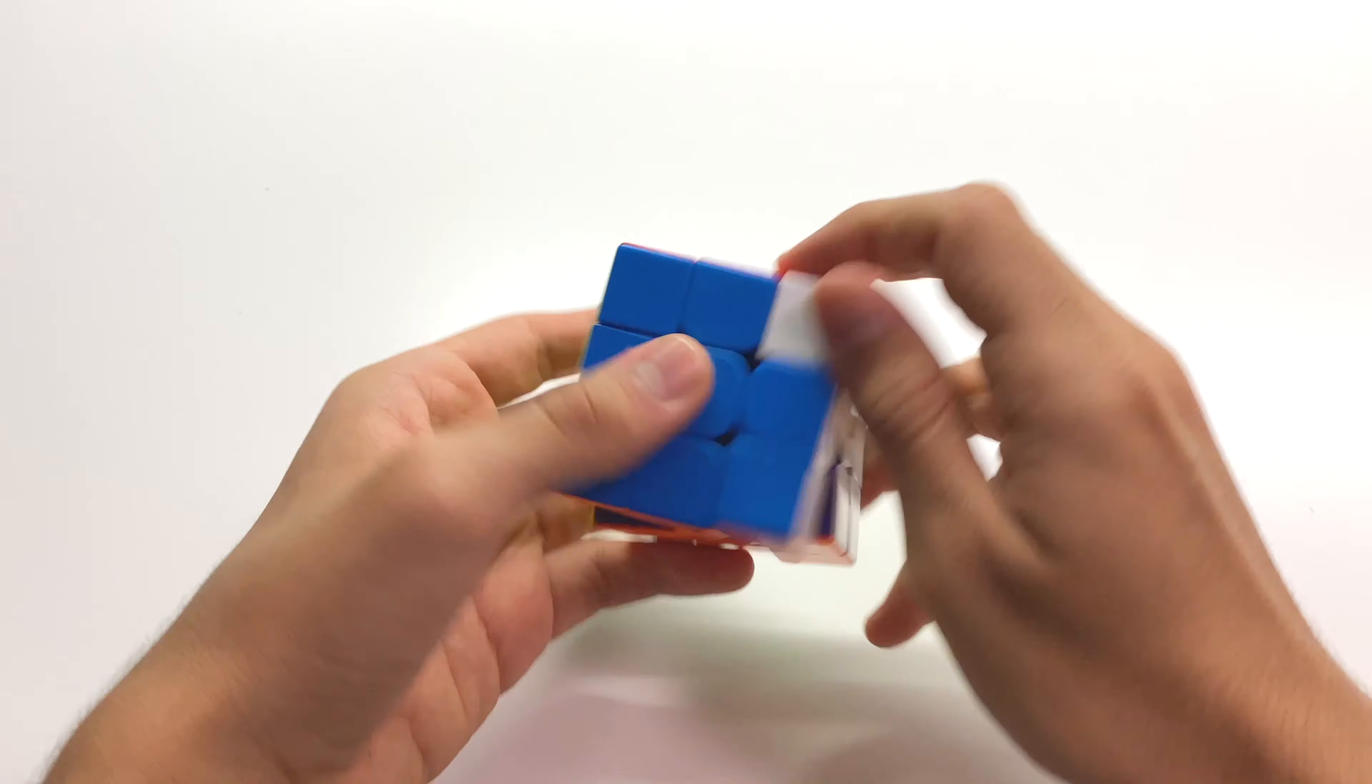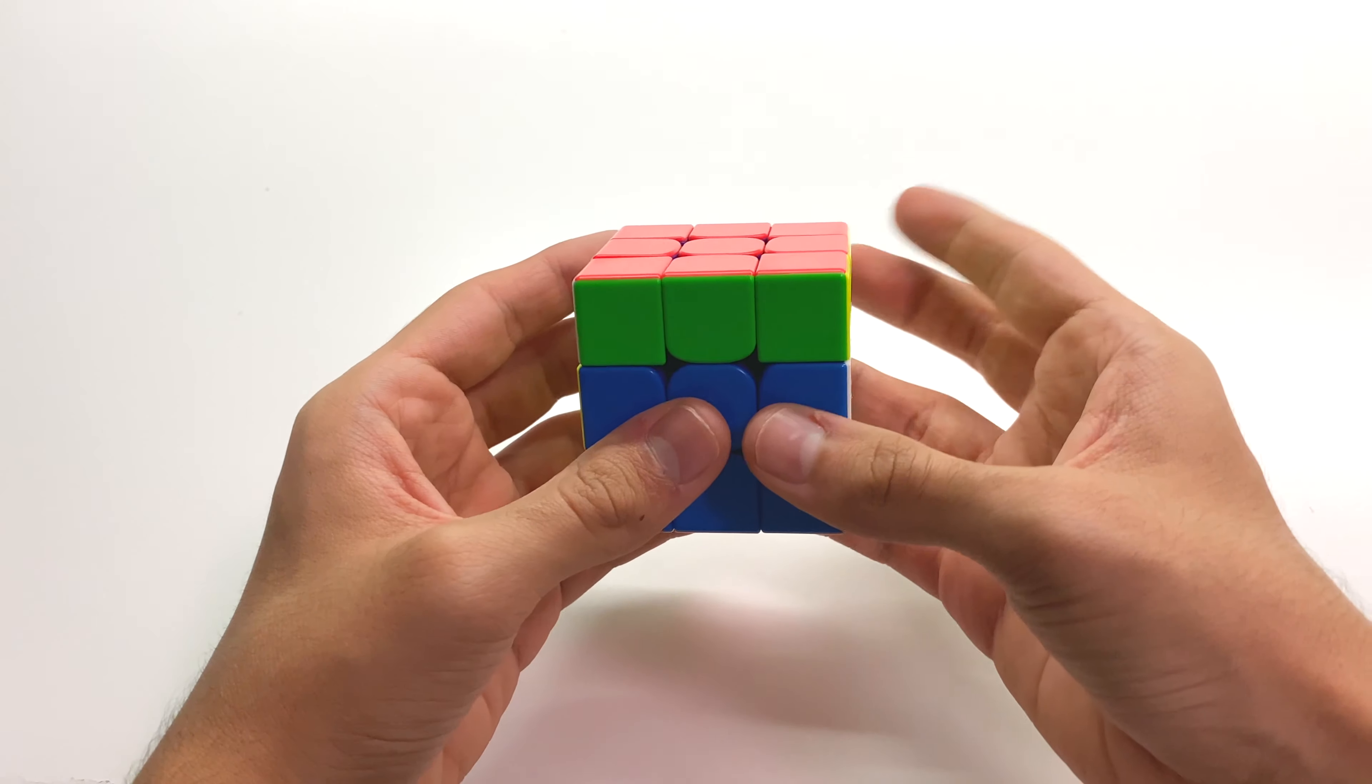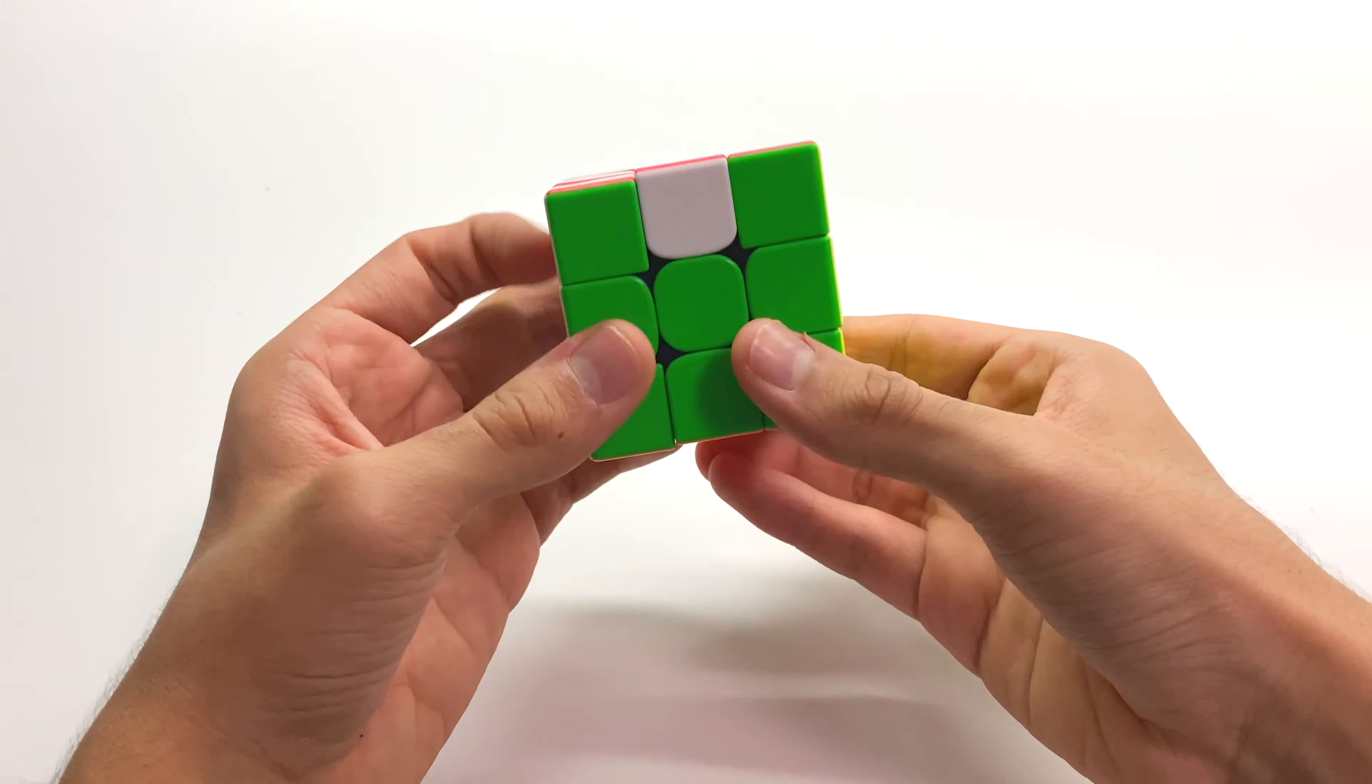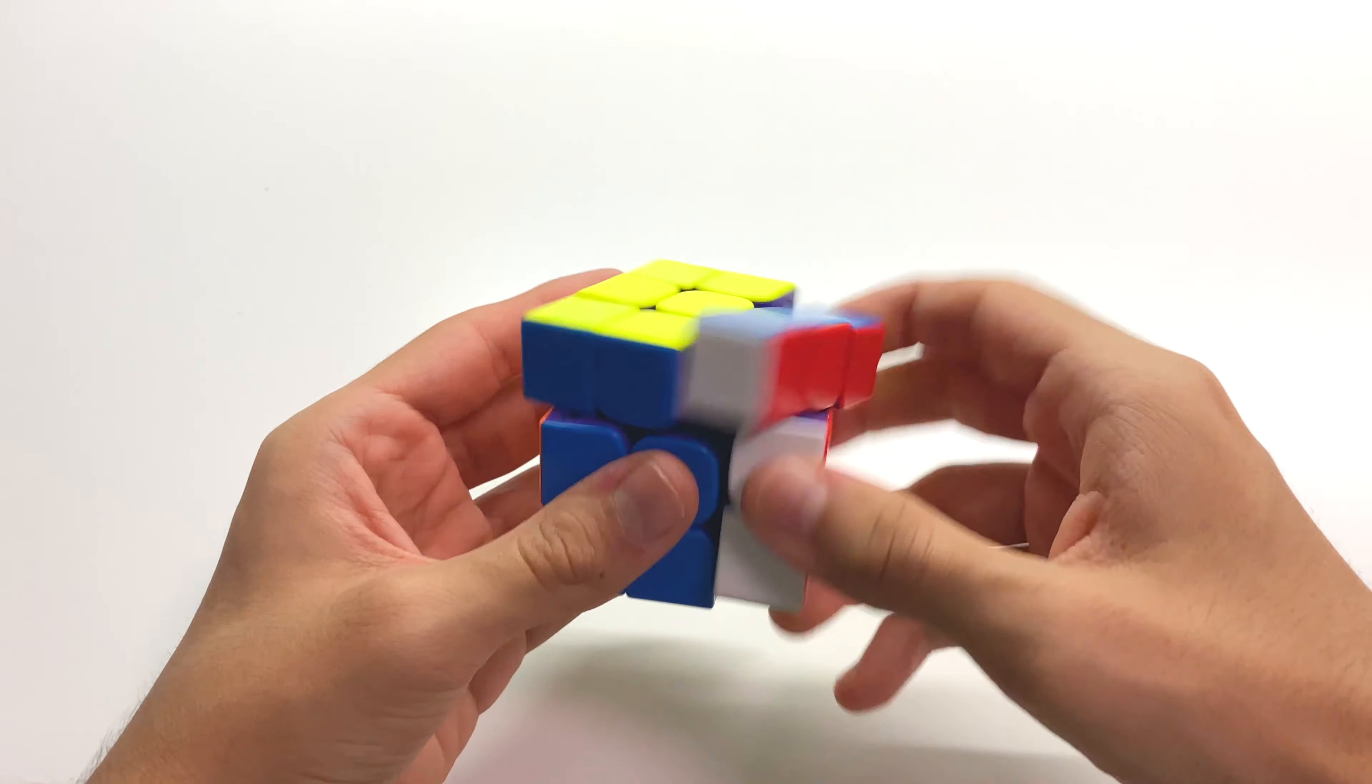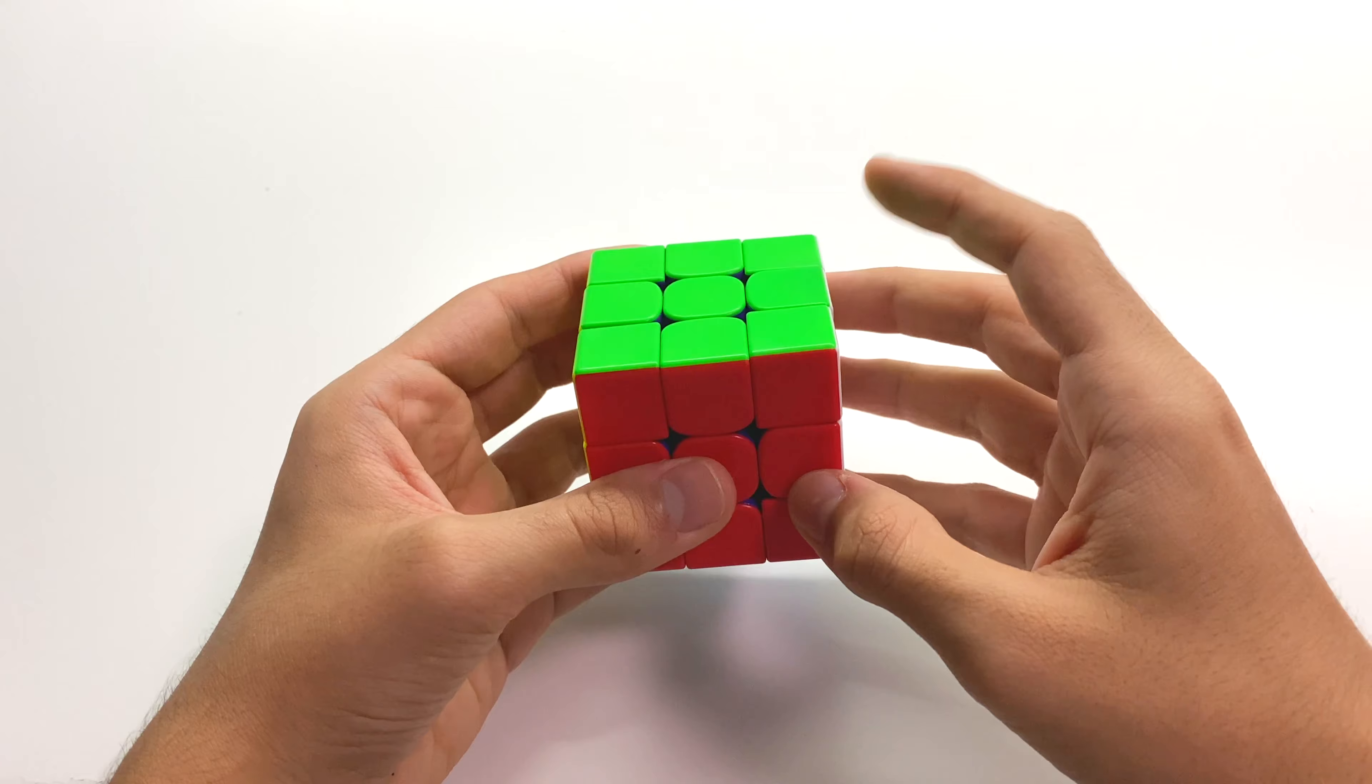While I do get a few minor catches here and there on this cube, I feel like it's more because I'm not used to the insanely fast speed of the Worm 2021 Maglev. I feel like over time, I'll be able to adapt to this cube better and get fewer catches. Pops and corner twists absolutely never happen on this cube. And this cube also feels really stable in your hand, which is a big plus point considering how fast the cube is.